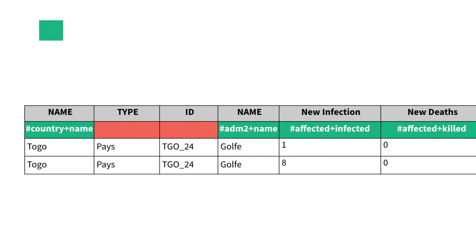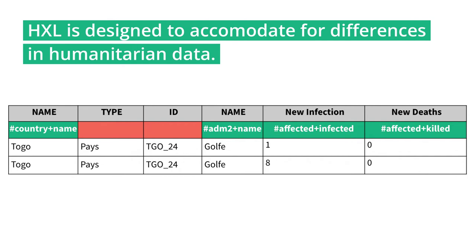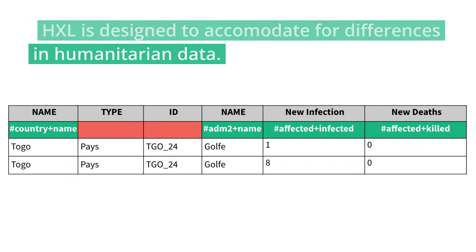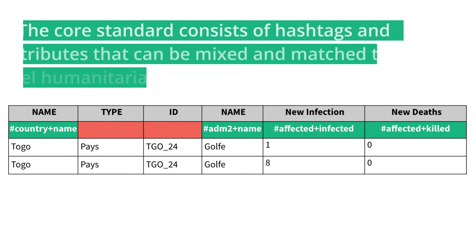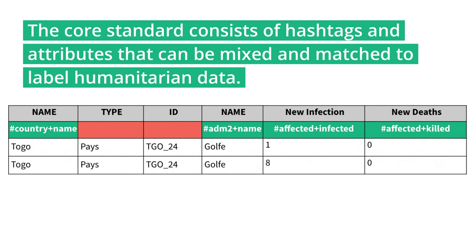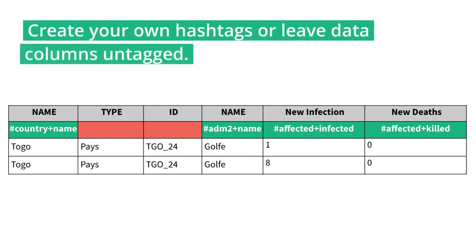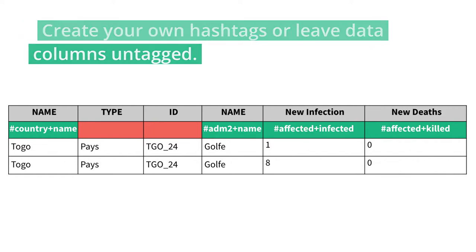The HXL standard was designed to accommodate for the differences in the ways humanitarians produce and share data. The core standard consists of hashtags and attributes that can be mixed and matched to label a wide range of common humanitarian data points. However, if the core HXL hashtags and attributes do not work for your data, you can choose to create your own hashtags or simply leave data columns untagged.